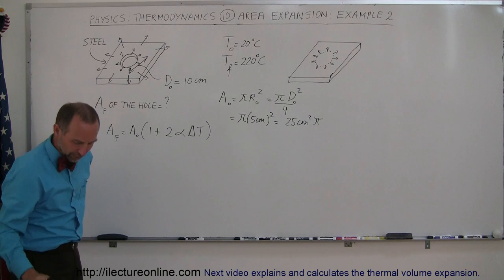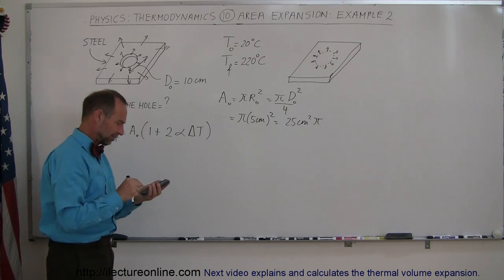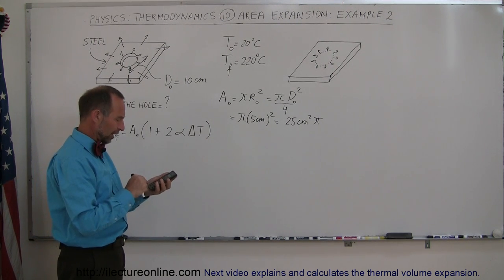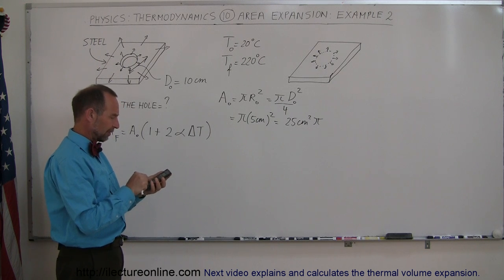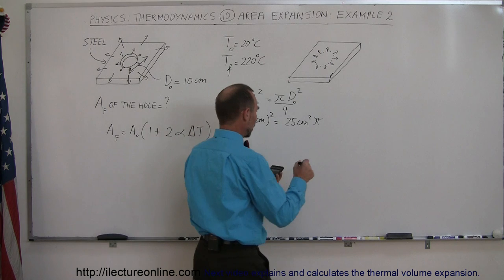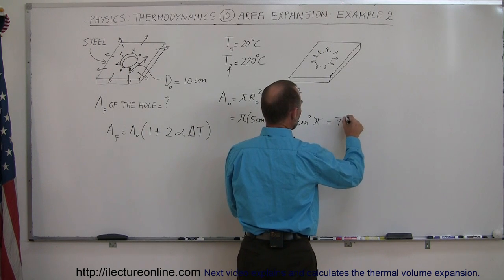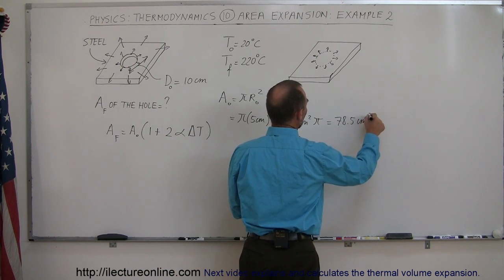Alright, so we can put that in here. With a calculator, let's just go ahead and get a close value for that. 3.14159 times 25 equals 78.5 square centimeters.